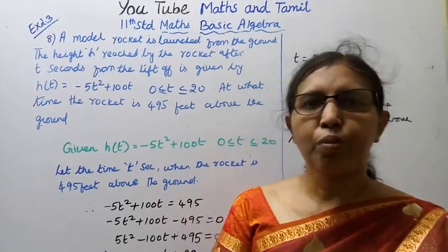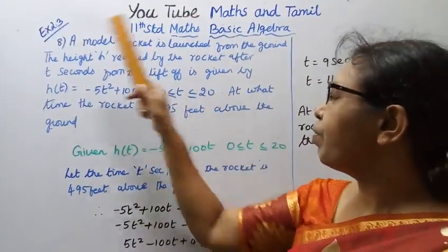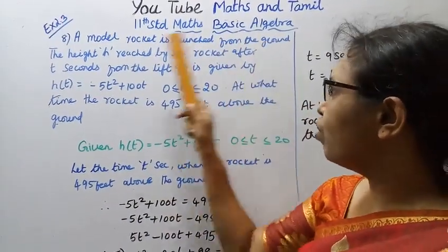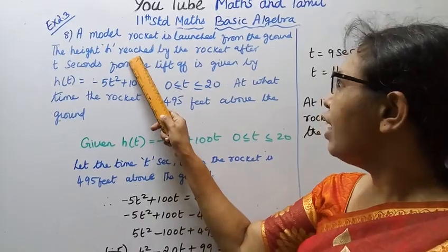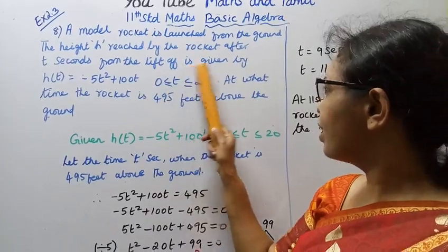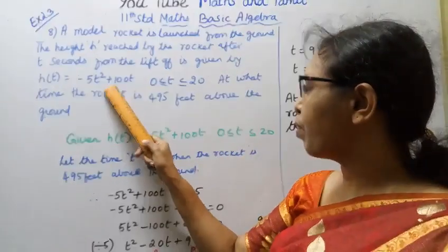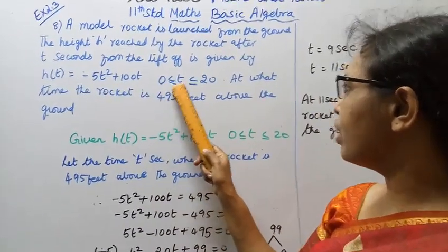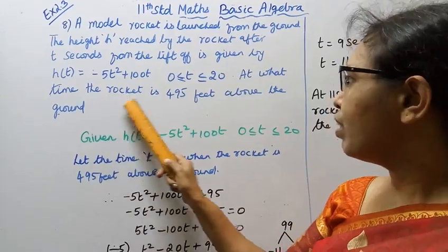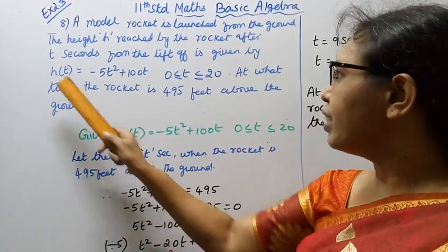Hello students, welcome to Max and Tamil Channel, 11th Center Max Basic Algebra Exercise 2.3. A model rocket is launched from the ground. The height h reached by the rocket after t seconds from the liftoff is given by h(t) = -5t² + 100t, where 0 ≤ t ≤ 20. At what time is the rocket 495 feet above the ground?